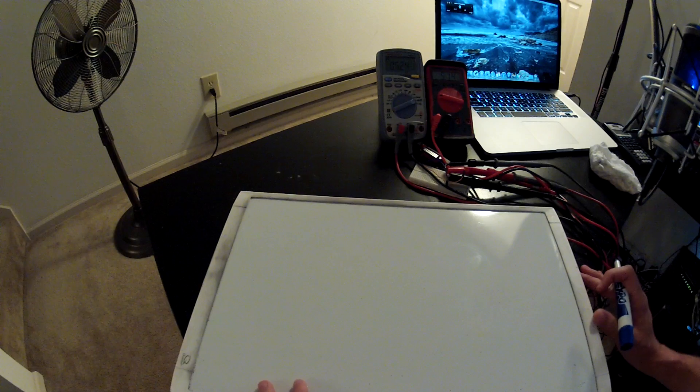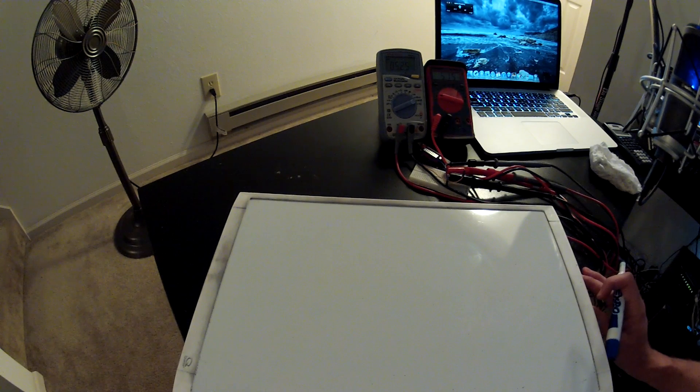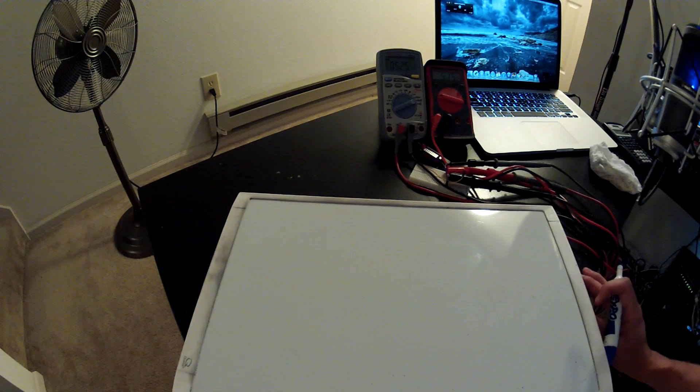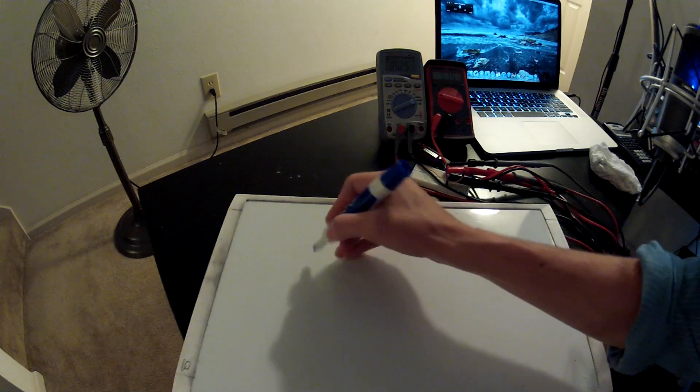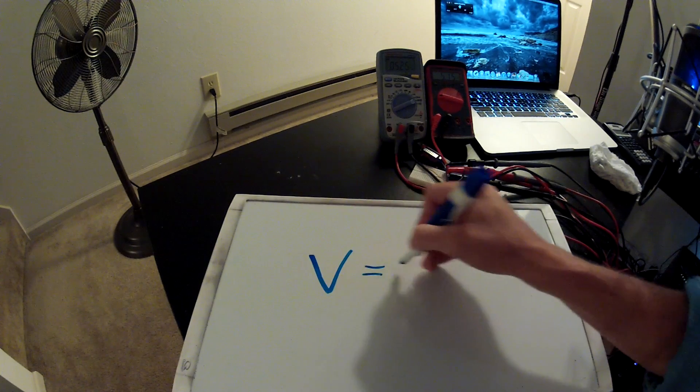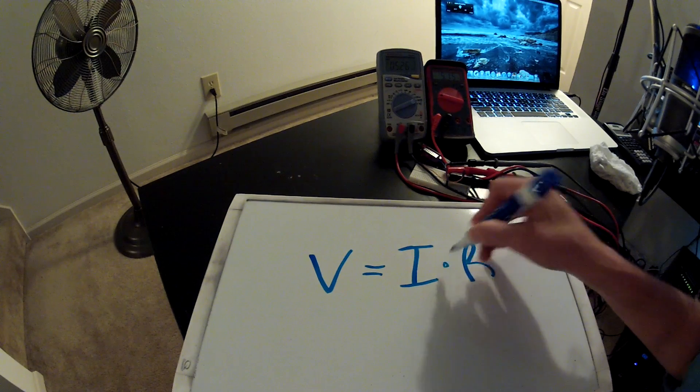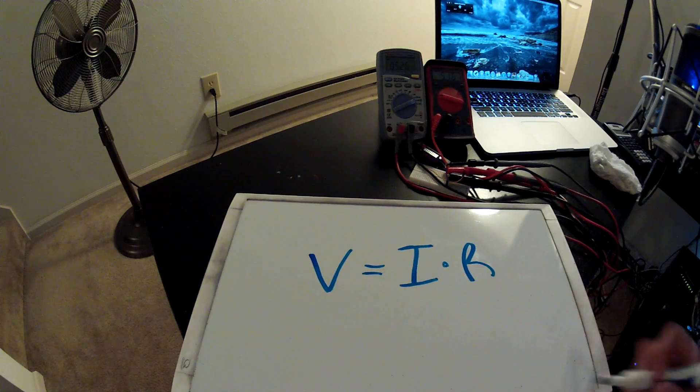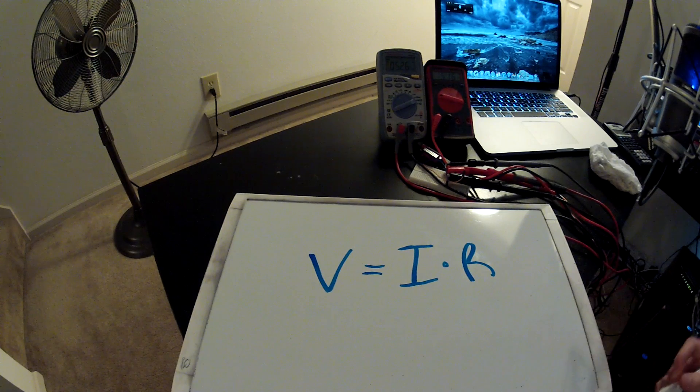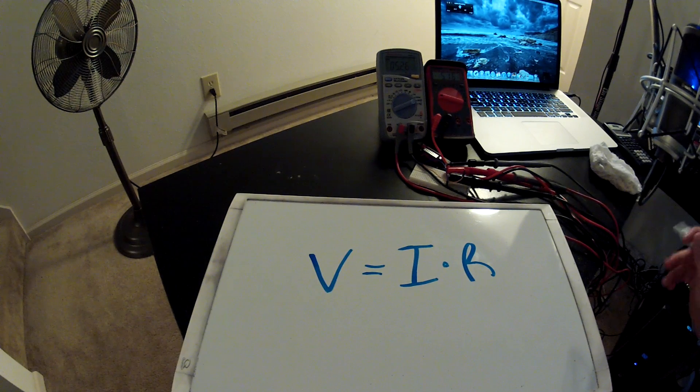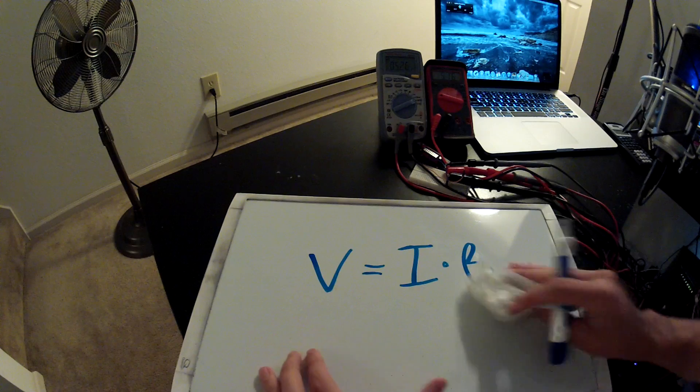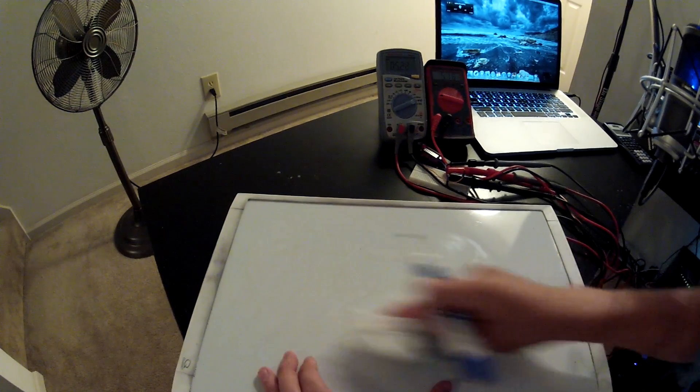videos going over the basics with different fundamentals in electronics design. So basically, Ohm's law is very simple. It's just an equation: V equals I times R, where V is voltage, I is current, and R is resistance. This is one way to represent it. An easier way though